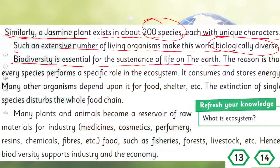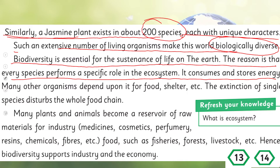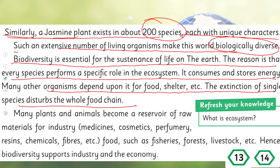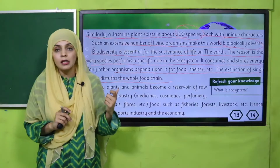Biodiversity is essential for the sustenance of life on earth. The reason is every species performs a specific role in the ecosystem — it consumes and stores energy, and many other organisms depend upon it for food, shelter, etc. The extinction of a single species disturbs the whole food chain. If you disturb or eliminate even one thing, the entire ecosystem will be disturbed.